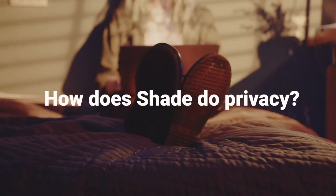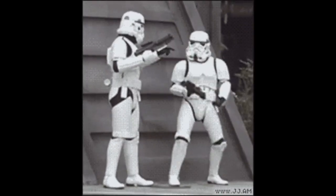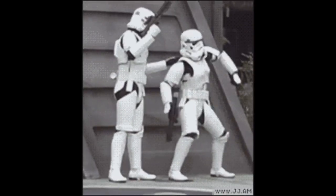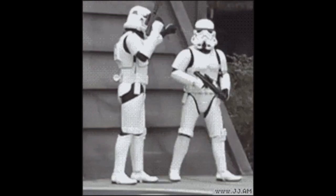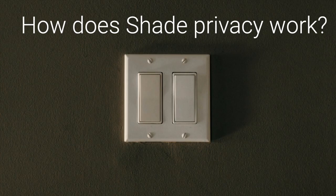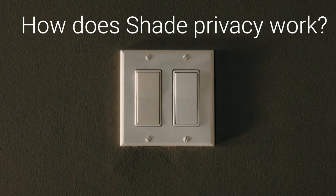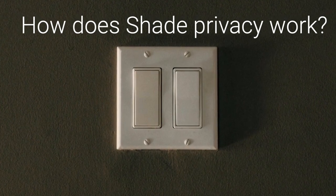Today we're going inside the privacy engine for Shade. In the first video in the series we saw how Shade Protocol keeps your data confidential using secret contracts. That was pretty high level. This video is going to be different — it's for the gigabrains, and it assumes that you already watched the first video but are still hungry like a wolf in a barren winter landscape. It's not enough for you to flip the light switch; you want to know how this stuff works, and I hope that this video enlightens you.